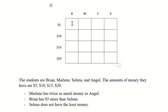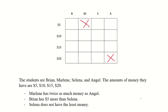Our goal is to fill this up with either X's or O's until we know who goes with what amount. For example, this box is for Brian and five dollars — either Brian does have five dollars and we put an O there, or Brian doesn't have five dollars and we put an X there. Looking at Clue 1: Marlene has twice as much money as Angel. That means Marlene has more money than Angel, so Marlene can't have the five dollars, and likewise Angel can't have the most money — twenty dollars.